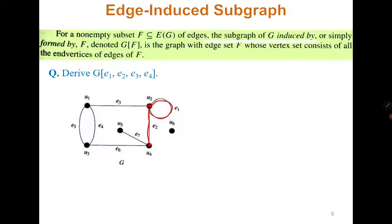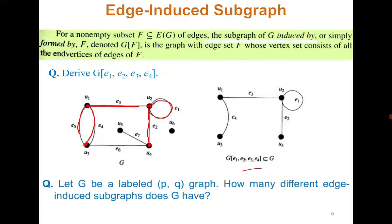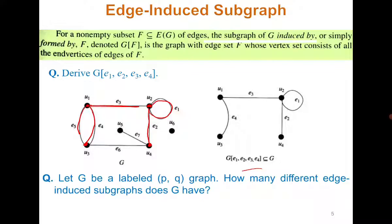So e1, then e2, then e3, and the last one is e4. This is how it looks like. In case we have to find the number of edge-induced subgraphs, instead of 2 raised to the power p, now we have 2 raised to the power q, because each edge can be present or not present, minus 1.